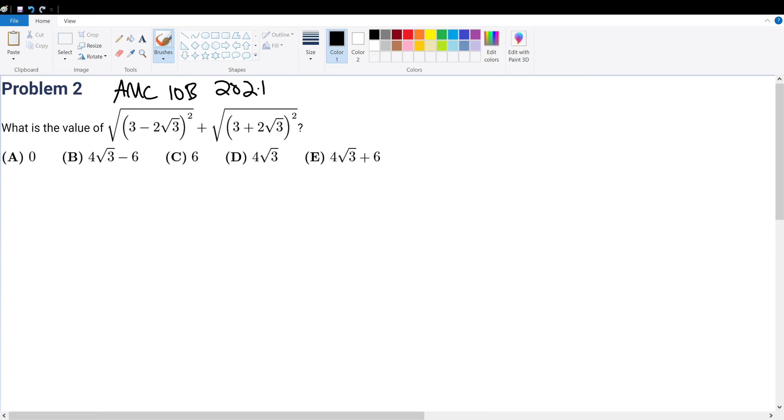AMC 10B 2021 problem 2: What is the value of the following expression? Right off the bat you see that we have two very simple looking expressions, so that should raise a red flag immediately because obviously AMC is not quite straightforward 100% of the time.